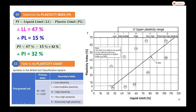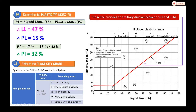We also have a secondary letter: L, I, H, V, and E. L is for low plasticity, I is intermediate, H is high, V is very high, and E is extremely high plasticity. These represent the plasticity behavior. The red A-line on the chart is the division between silt and clay — above the A-line is the clay soil region, and below the A-line is the silt (M) soil region.